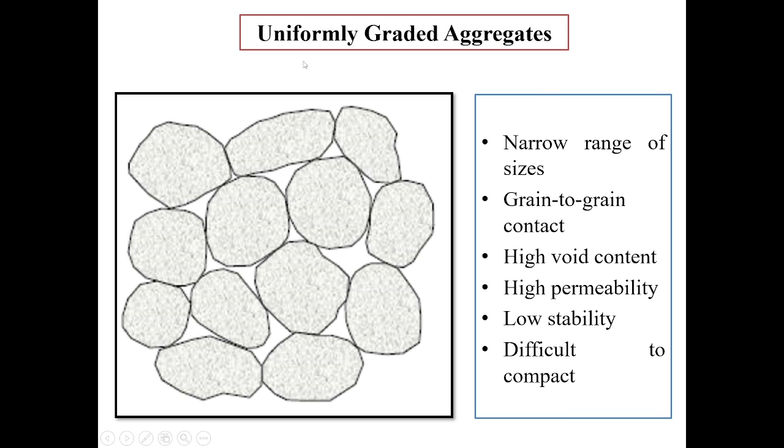First is uniformly graded aggregates. As the name indicates, there will be narrow range of sizes. That means all the aggregates will be more or less of the same size. There will be grain-to-grain contact. However, the void content will be high and therefore it will lead to high permeability, low stability, and these aggregates are difficult to compact.